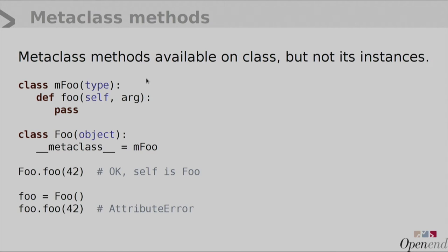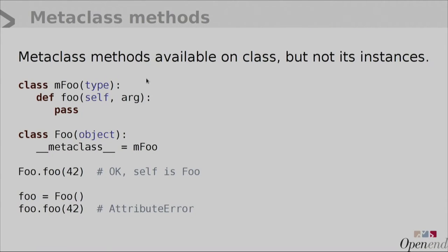If you add other methods on your metaclass — which you may want to do because you don't want to have 300 lines of `__new__` — those methods will be visible on the class, but not on the instances of the class. It's good to know, because you'd be confused about why you can call the foo method on the class but not on the instance. It was on the metaclass.